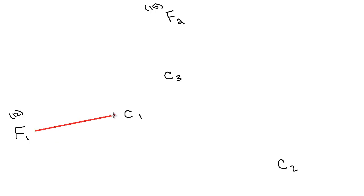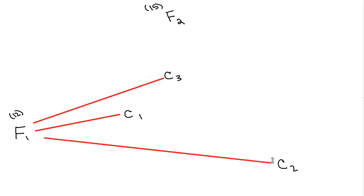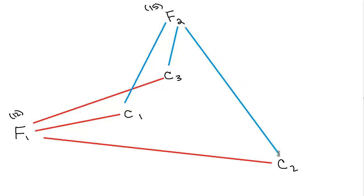The next thing we want to do is draw our shipping lanes. Each factory can ship to each customer — there are no limitations on that. So Factory 1 can go to Customer 1, Customer 3, and Customer 2. Same thing for Factory 2 — it can also go to all three customers. So, keeping with Memorial Day weekend when I did this video, we have our red, white, and blue shipping lanes. You can see there are three in each for a total of six shipping lanes.